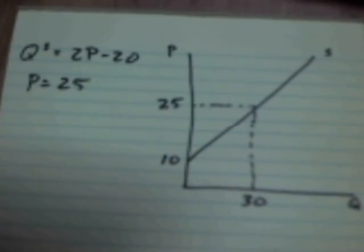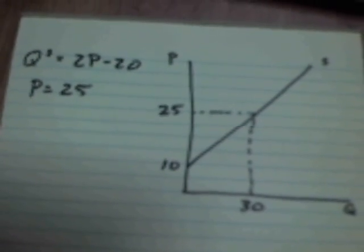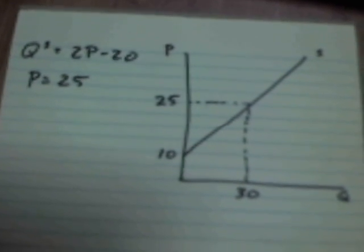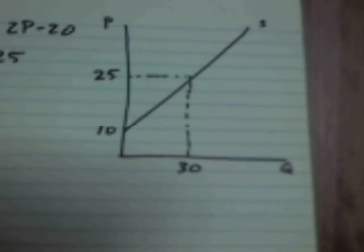Okay, so here's the situation. Quantity supplied is equal to 2 times the price producers get to keep, minus 20. Suppose we start at a price of 25. Here's what things look like graphically.